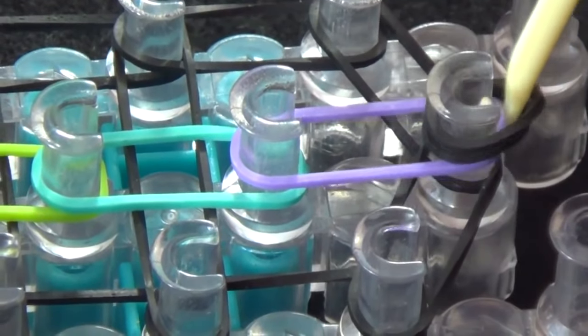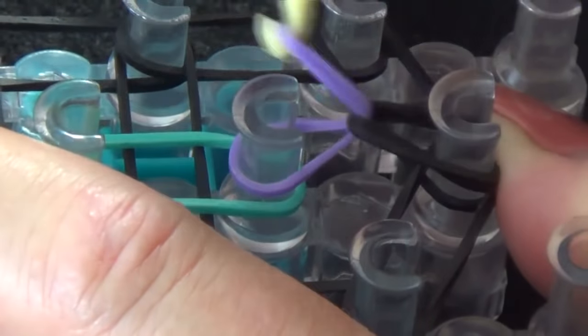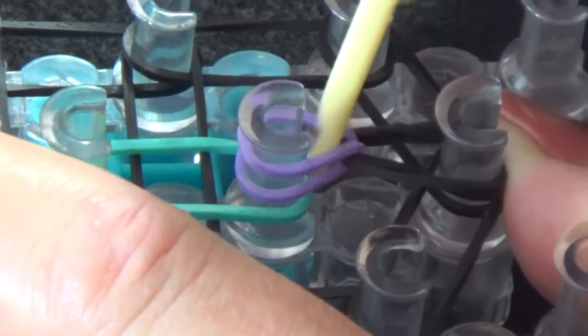You'll grab the purple rubber band, hold that cap band down with your thumb, and loop the purple band over this first pin there.